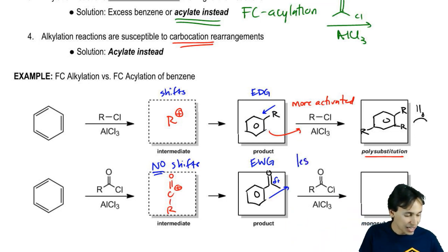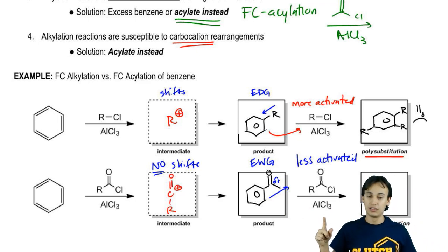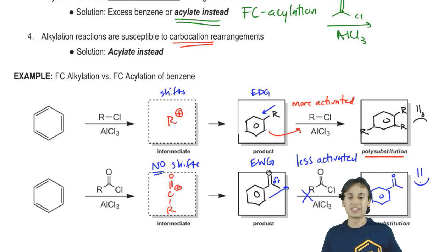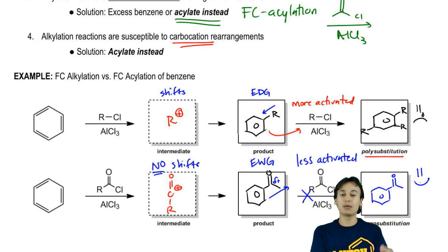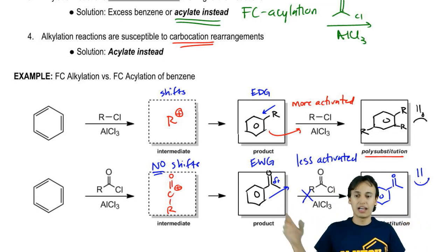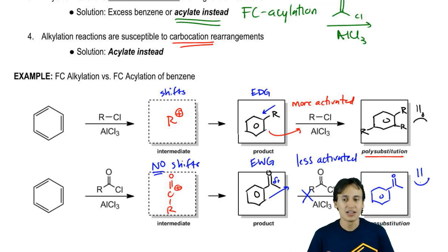But what happens with electron withdrawing groups? Electron withdrawing groups make it less activated. So what happens when it sees the second acylium ion? Does it go attack it? No, the answer is this doesn't happen - there's no reaction. So it stays at monosubstitution. That makes me happy because that's what I wanted the whole time. I didn't want some mess of polysubstitution - I wanted just one thing on my benzene ring, and that's what I get with acylation. Not only that, I didn't have a rearrangement that messed up my yield. I just got exactly what I was looking for. So now you can see why acylation is more advantageous to use than alkylation.